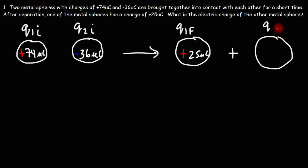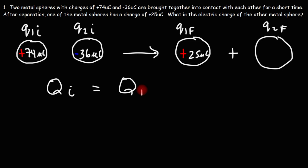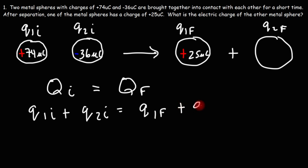What is the charge of the other metal sphere after contact — what's Q2 final? According to the law of conservation of electric charge, the total charge Q initial before contact was made must equal the total charge after the two metal spheres came into contact. Since this is a closed system with no outside forces, the total charge before and after contact must be the same. So Q1 initial plus Q2 initial equals Q1 final plus Q2 final.